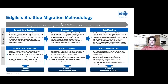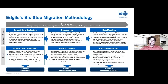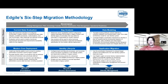The first step is the current state evaluation, where we look at your existing legacy solution or whatever processes are currently in place outside of an identity solution. We take in that information to determine what we need to do to get from where we are now to a modern platform. The gap analysis step figures out what those gaps are, what new processes we want to implement, and what current processes need to change.